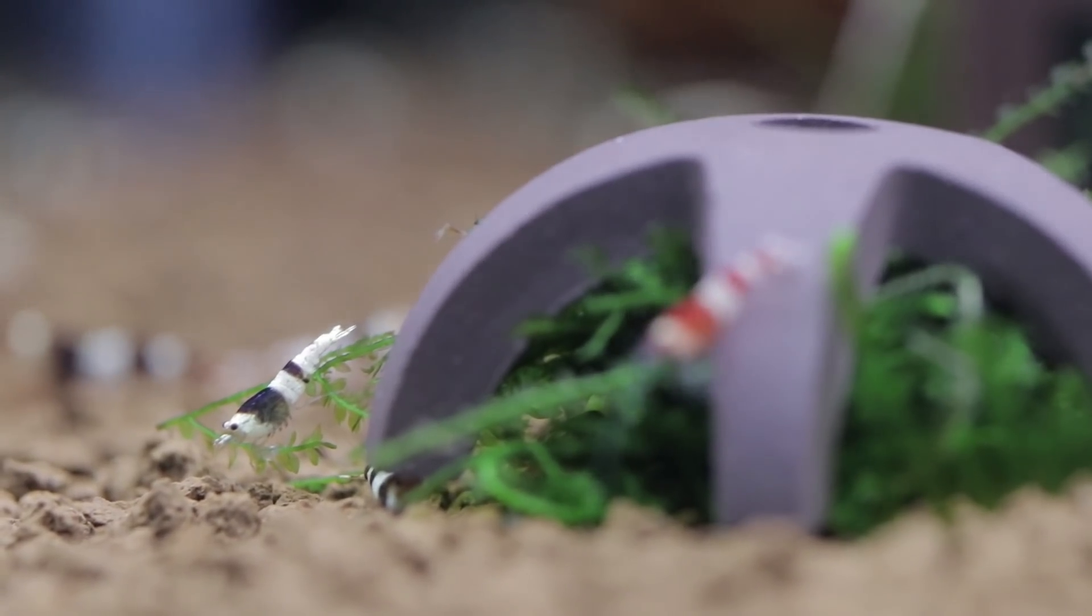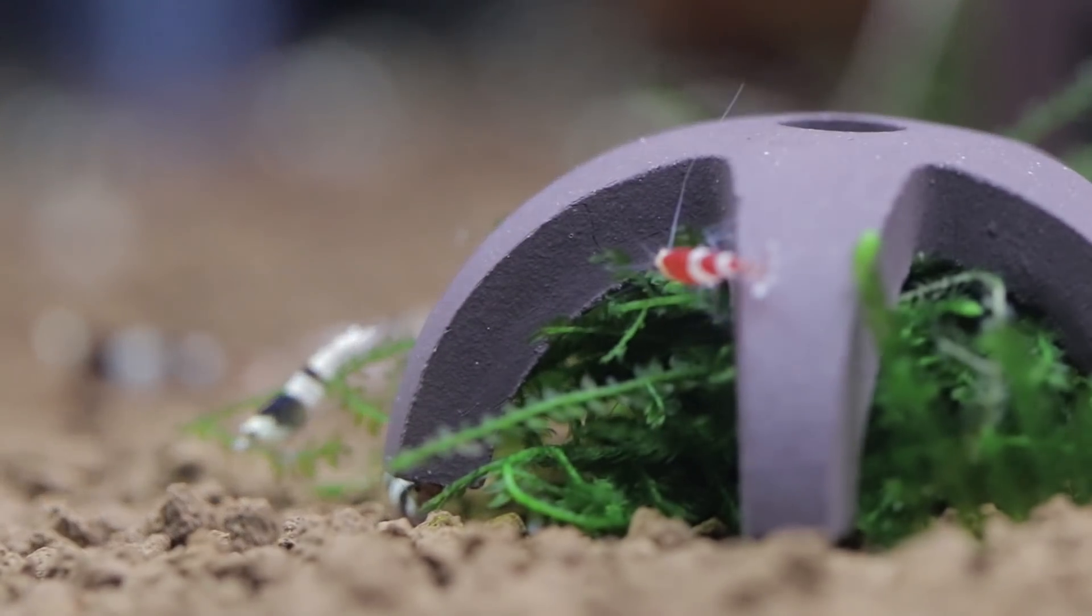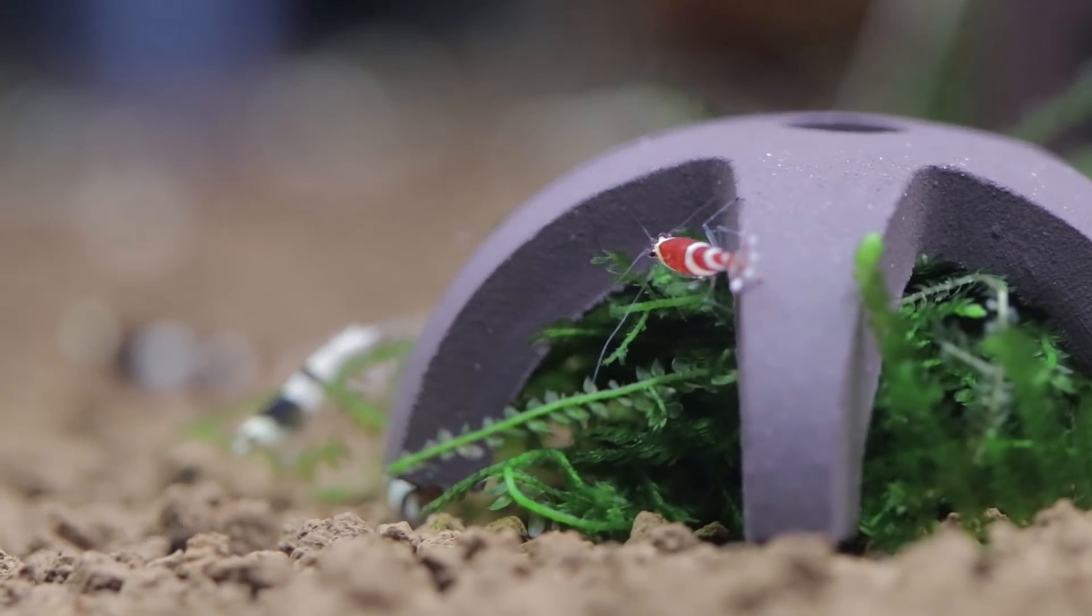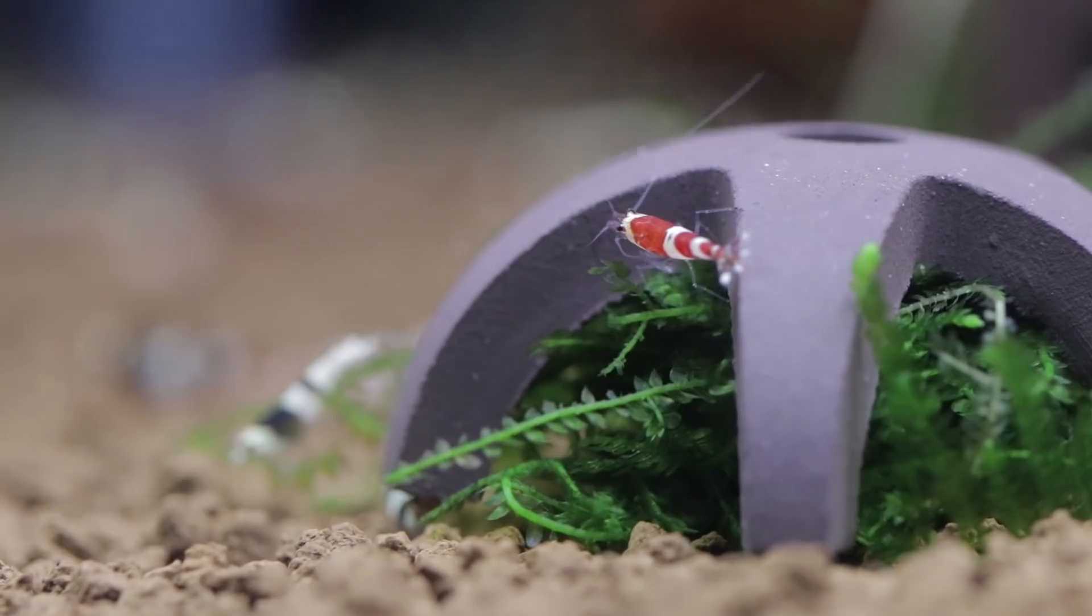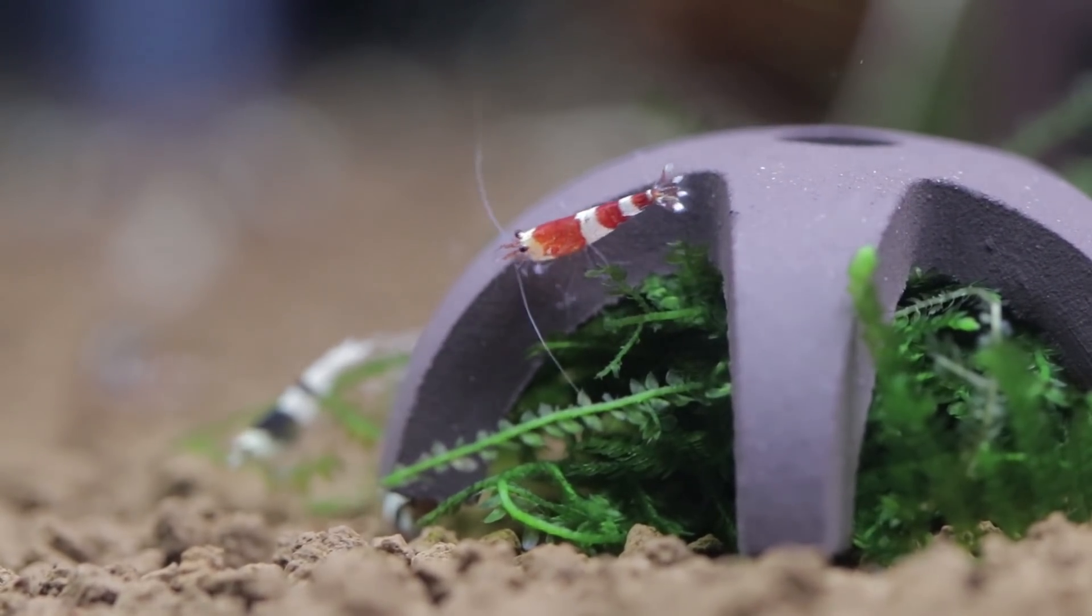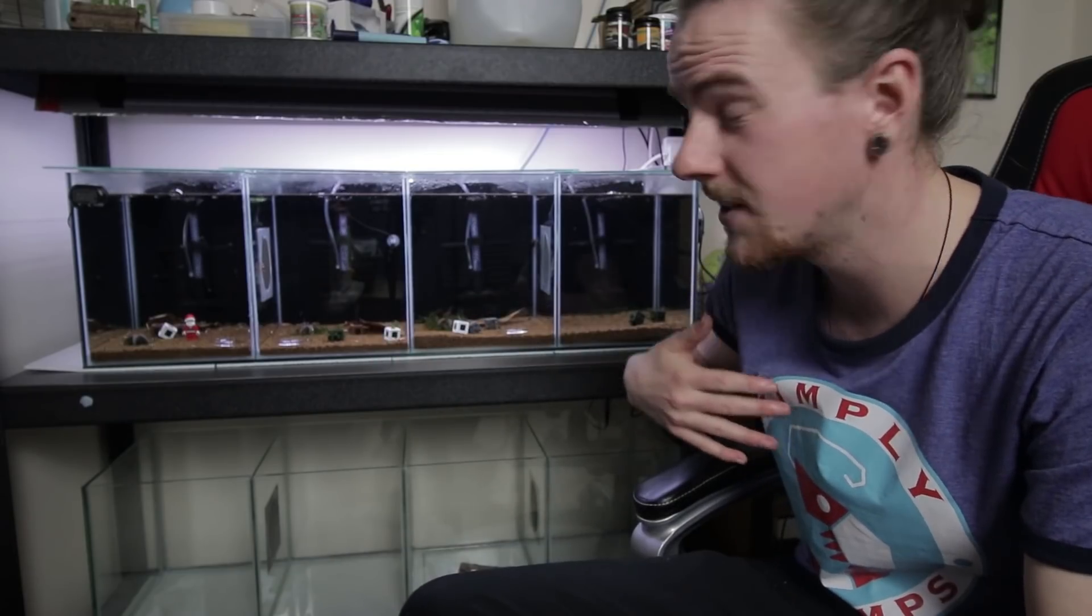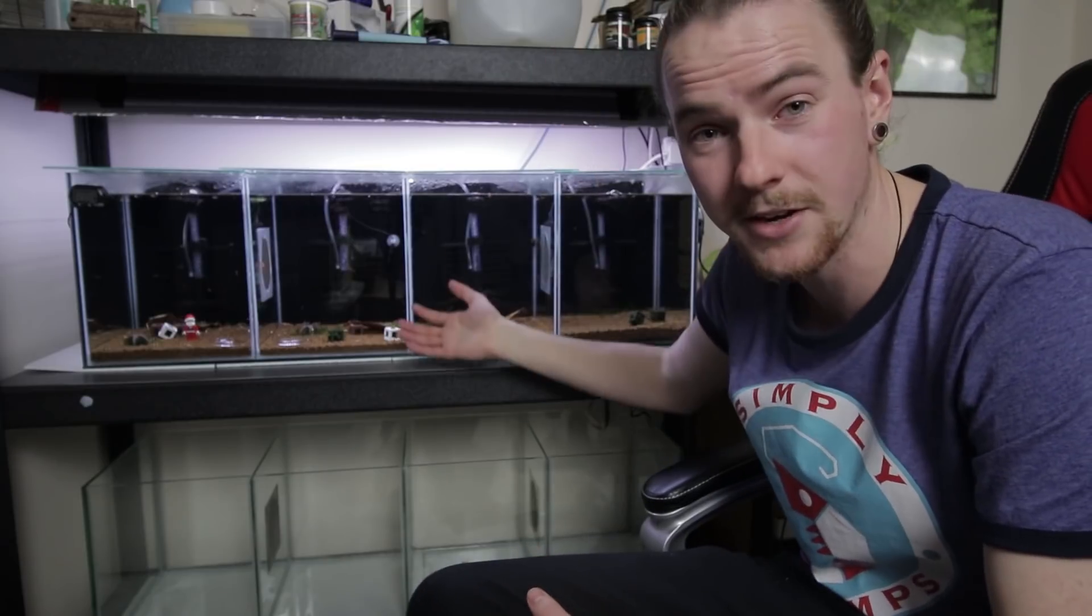However, my crystal black shrimp, well, they're popping out a crystal red every now and then. Now, this is where the problem occurs. So if there's a baby crystal red shrimp from a crystal black shrimp adult and it goes through into my crystal red shrimp system, how am I supposed to know whether it is from my crystal reds or it's from my crystal blacks?